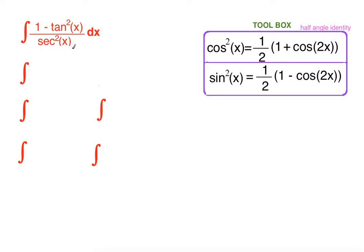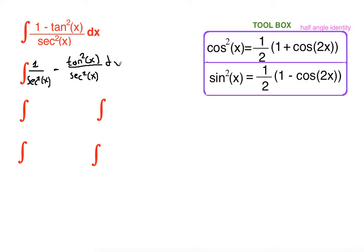Secant squared of x is the common denominator for both 1 and tangent squared of x. So we can rewrite it as 1 over secant squared of x minus tangent squared of x over secant squared of x, dx.